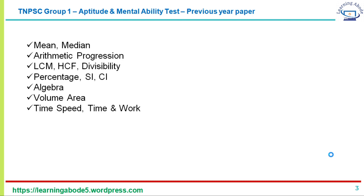The level of these questions, as explicitly mentioned in the notification, is of SSLC standard — so these are typically very easy to solve. Among these 25 questions, every year there are at least six to eight questions where you can get the answer directly: you look at the question, look at the answer choices, and the answer is right there without writing even a single step. You have to especially target those questions.